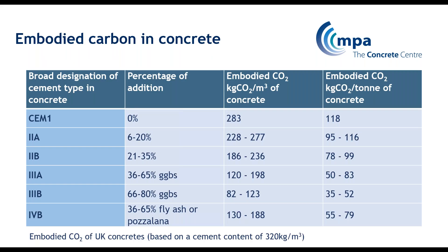We also looked at the different types of cements you can use within concrete. These are broad definitions of the cement types, and I've shown both embodied carbon per cubic metre and embodied carbon per tonne. You can actually see that concrete is a low embodied carbon material — these numbers are kilograms per tonne, not kilograms per kilogram. CEM1 is obviously the highest, but a CEM3B type concrete gives you very low numbers of around 35 to 60. This assumes 320 kilograms of cement per cubic metre of concrete, as in a C32/40 concrete. There is no reinforcement included in these numbers.